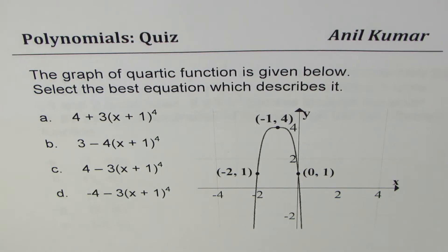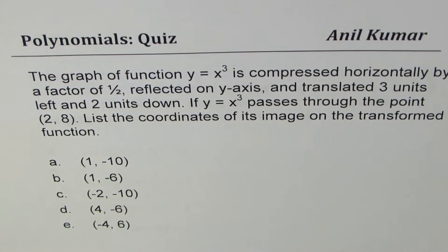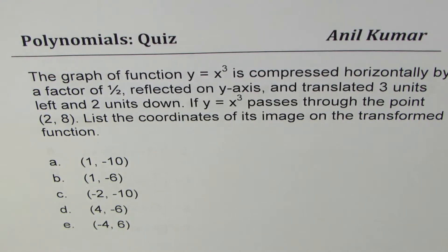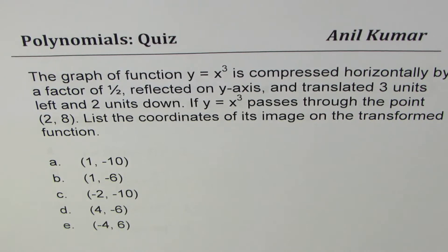Here is the second multiple choice question on polynomial transformations. The graph of function y equals x cube is compressed horizontally by a factor of half, reflected on the y-axis, and translated three units left and two units down. If y equals x cube passes through the point (2, 8), list the coordinates of its image on the transformed function. The five choices are: (1, -10), (1, -6), (-2, -10), (4, -6), and (-4, 6). Pause the video, answer, and then look at my solution.